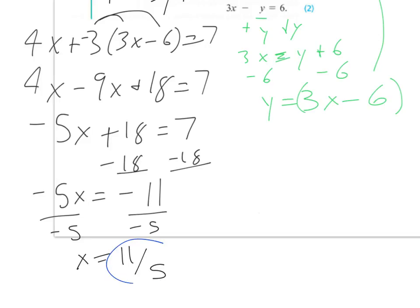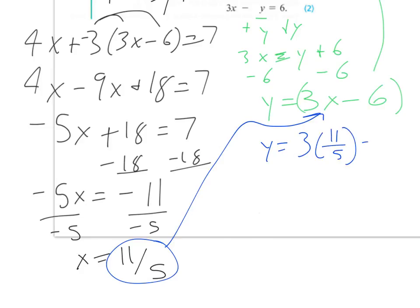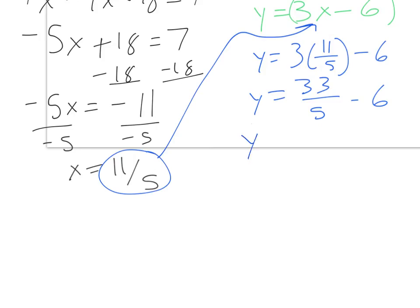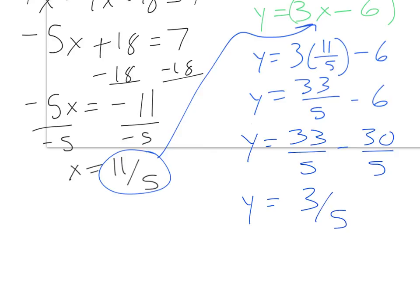Now that I have 11/5, I can plug that in for x: y equals 3 times 11/5 minus 6, which gives 33/5 minus 6. If you think of 6 as 30/5, then 33 minus 30 is 3, so we get y equals 3/5. These can be left as fractions, although fifths will turn out to be nice decimals if you prefer those.